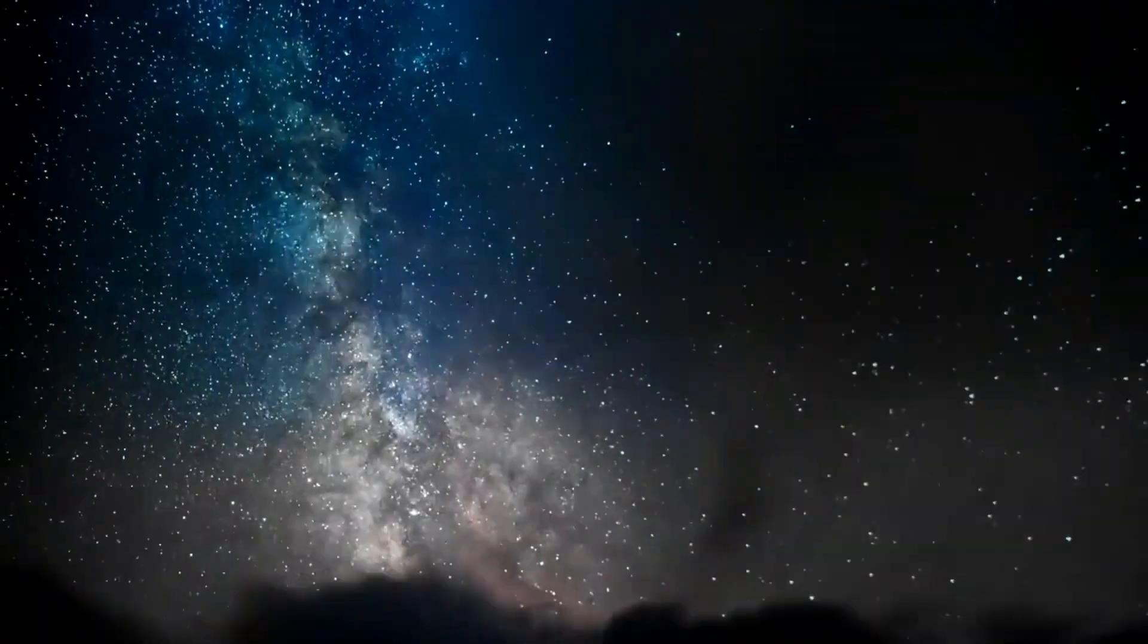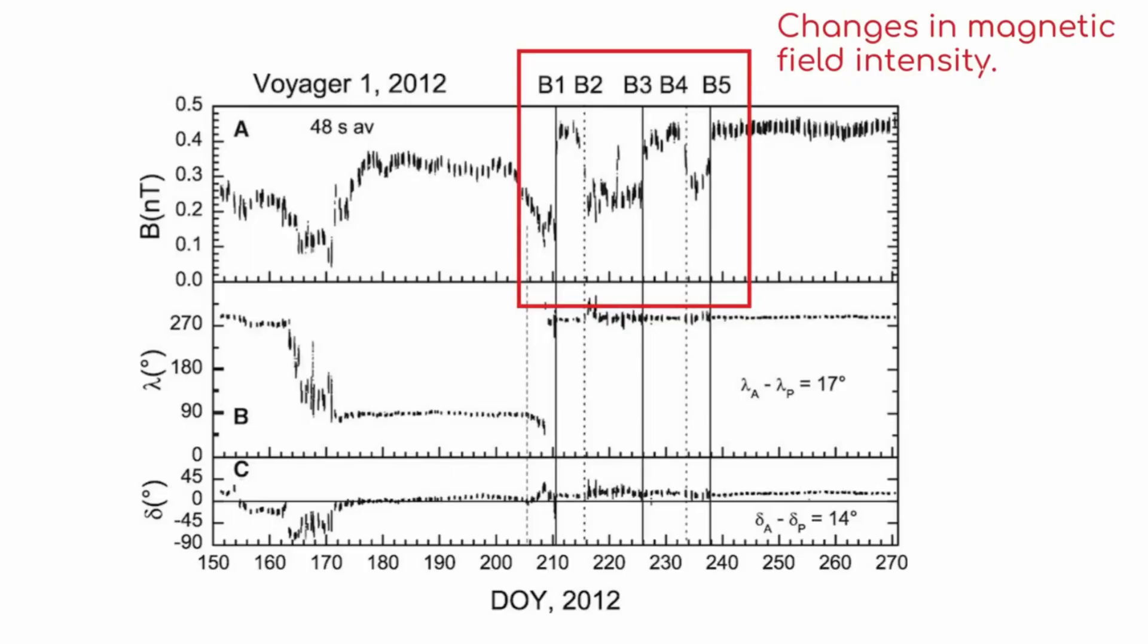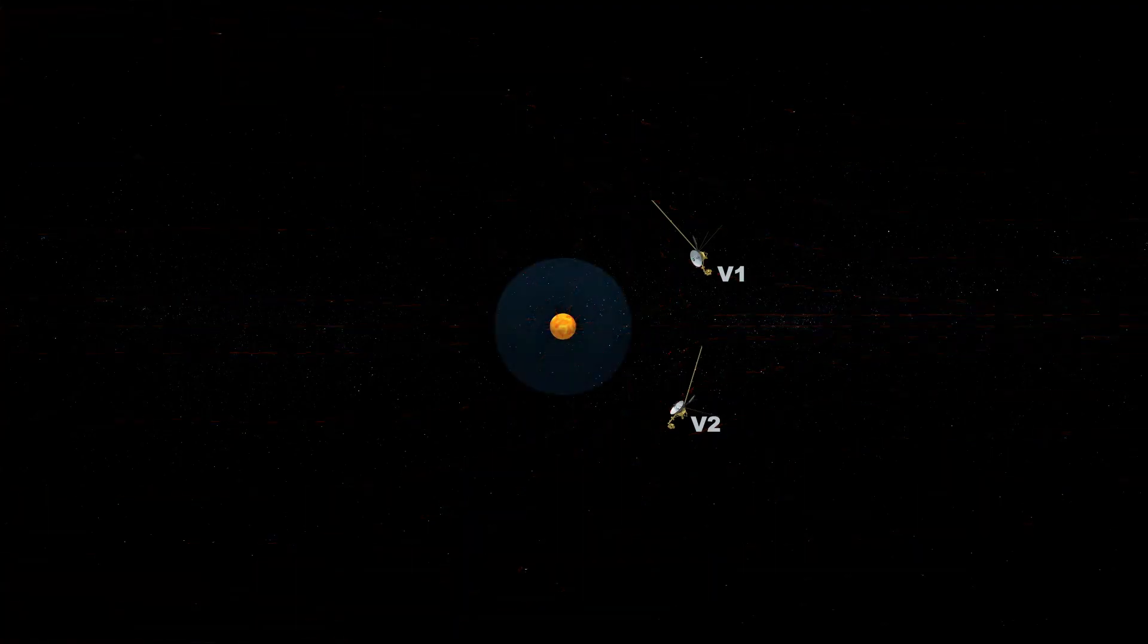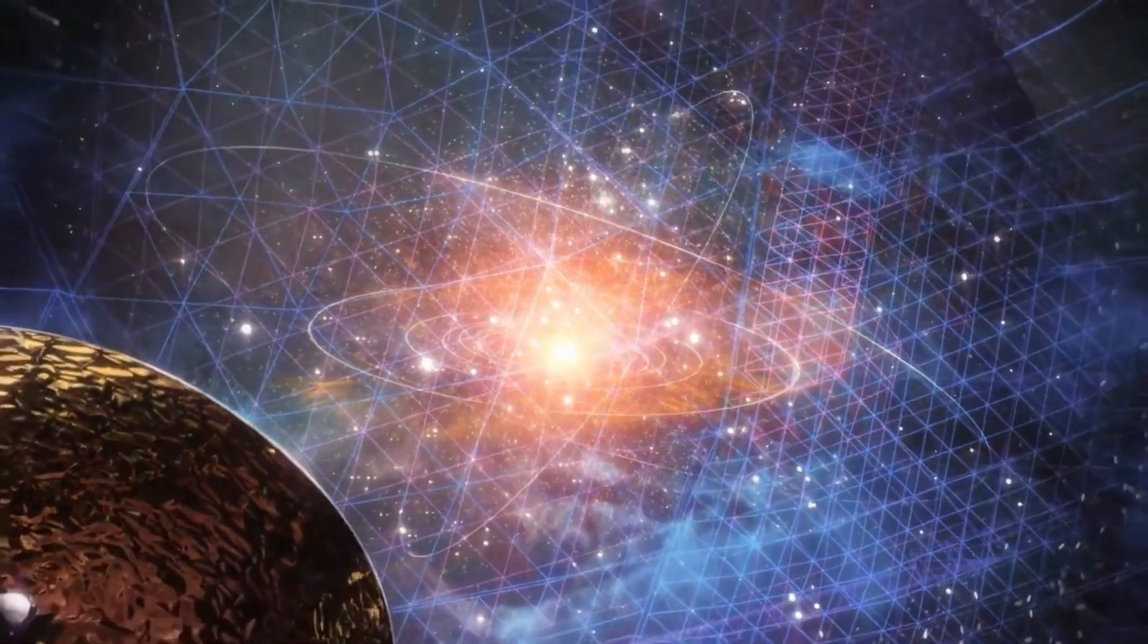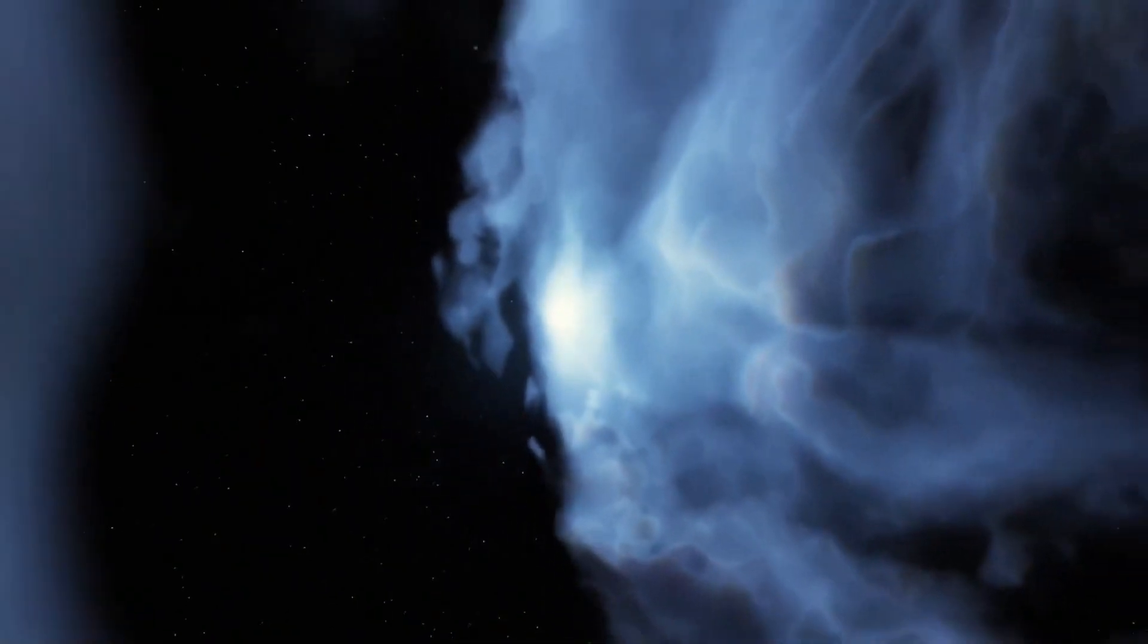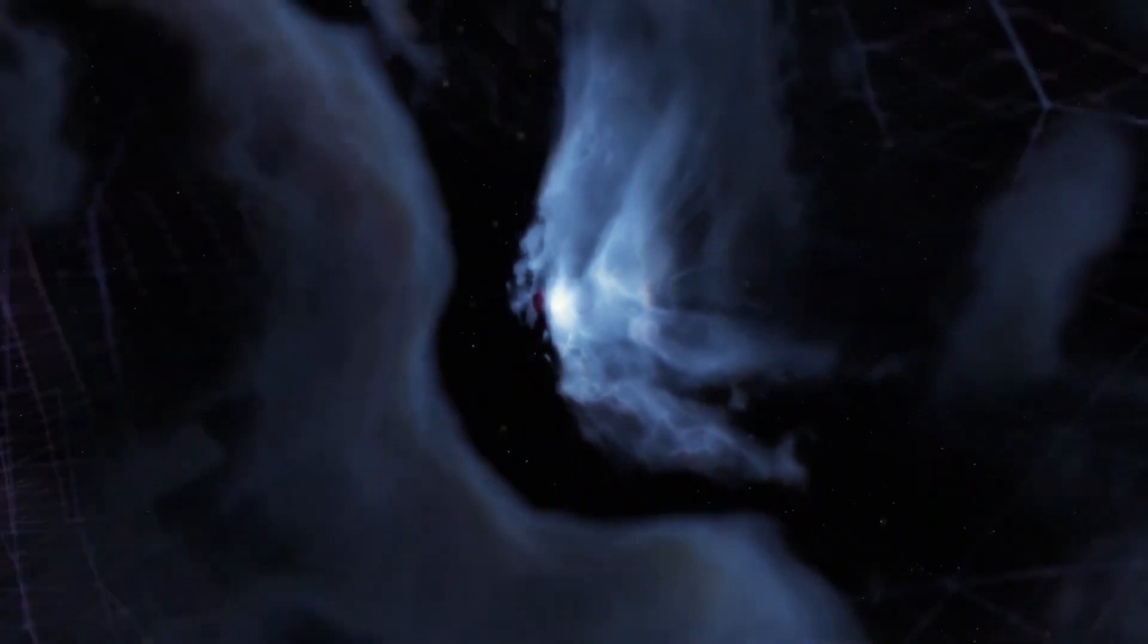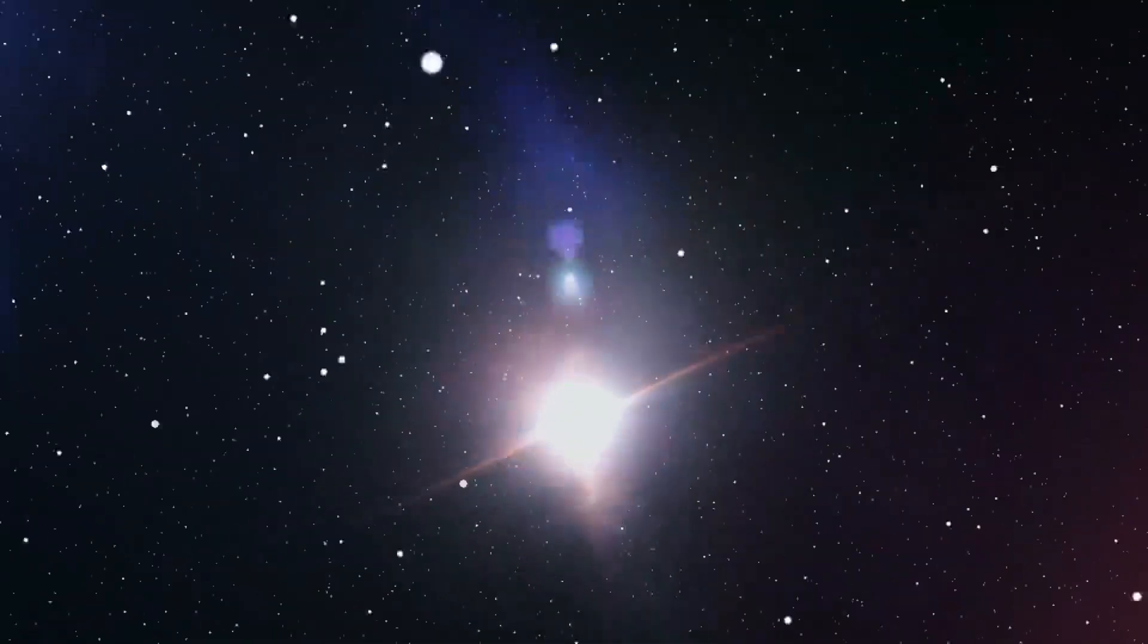Years later, in November 2018, Voyager 2 crossed the heliopause too. And what it found didn't just confirm Voyager 1's data, it added to the mystery. Voyager 2 measured a similar sudden drop in solar particles and a dramatic increase in galactic ones, marking the boundary. But again, the magnetic field's behavior was strange. It wasn't uniform. It twisted and curved, suggesting that even out here, far beyond the planets, the sun's influence still leaves echoes, like the ripples of a wave long after a boat has passed.